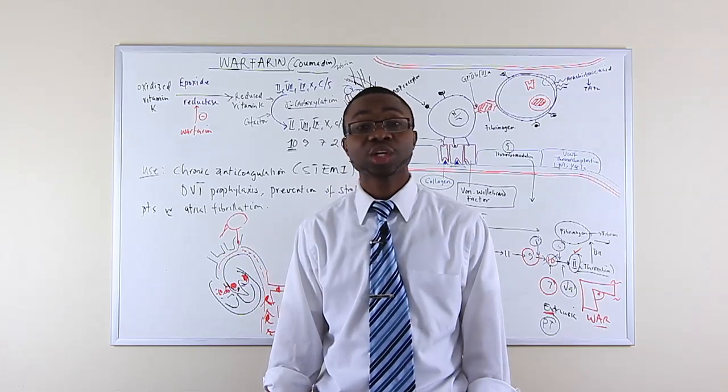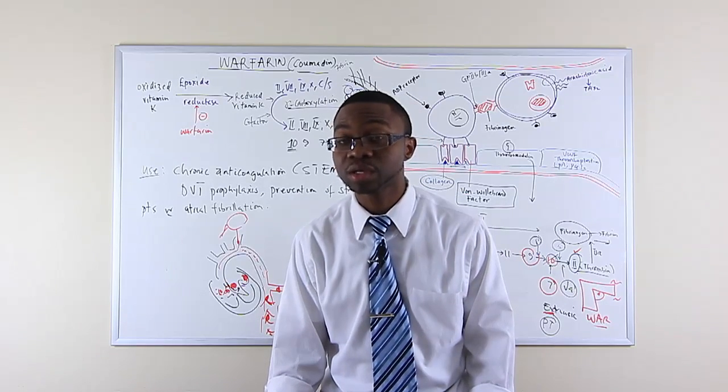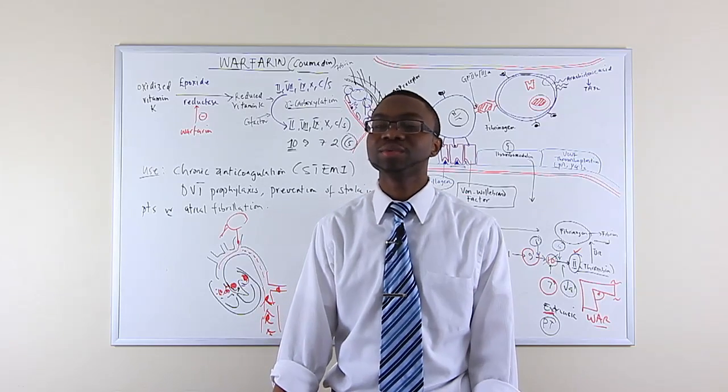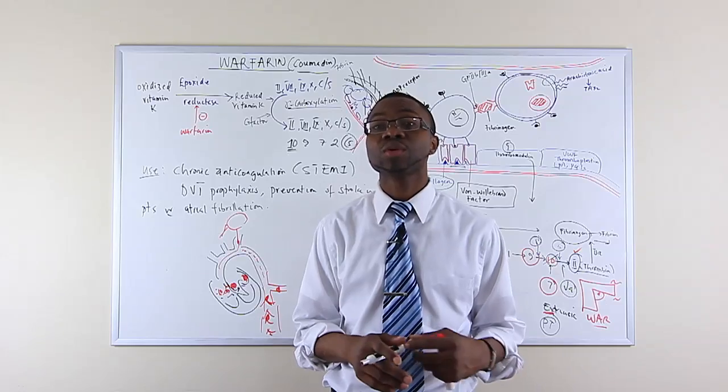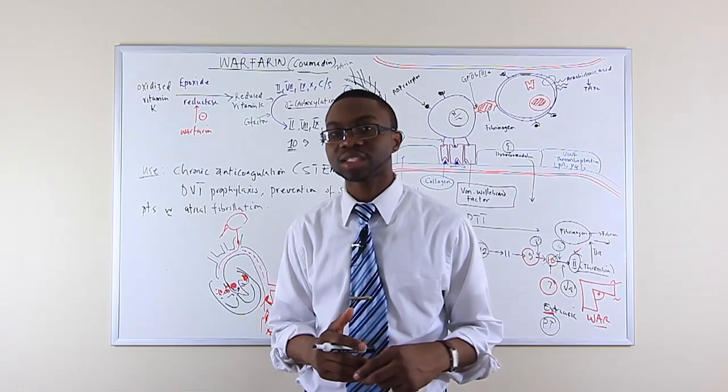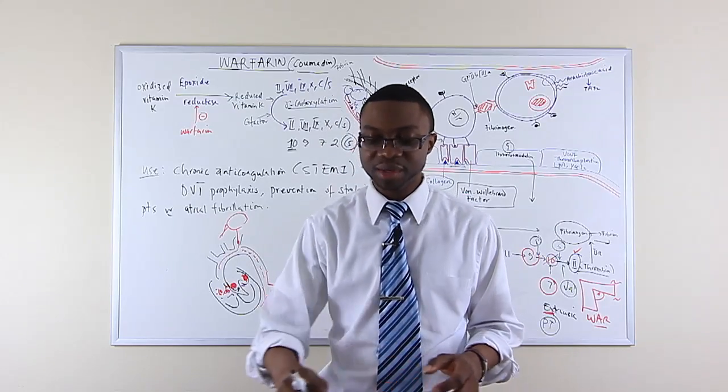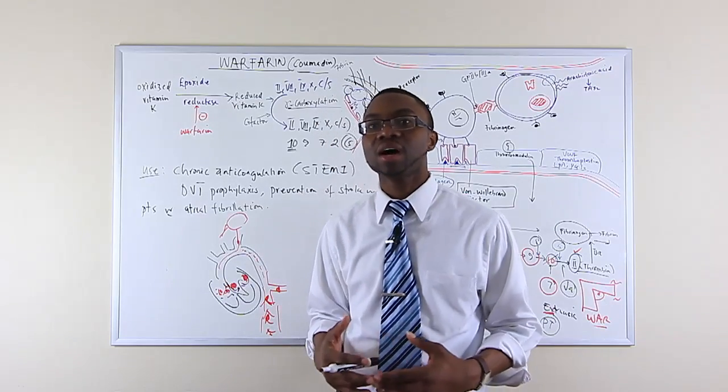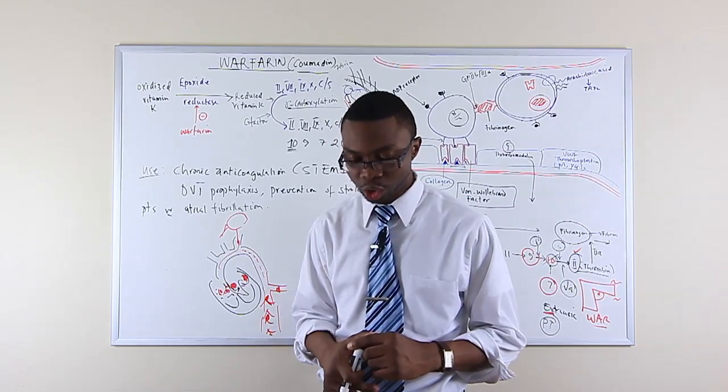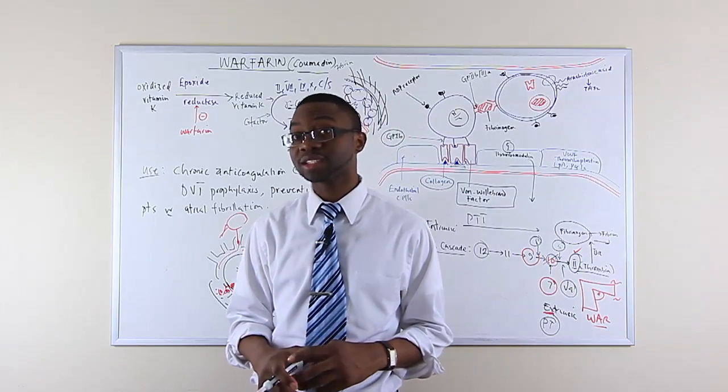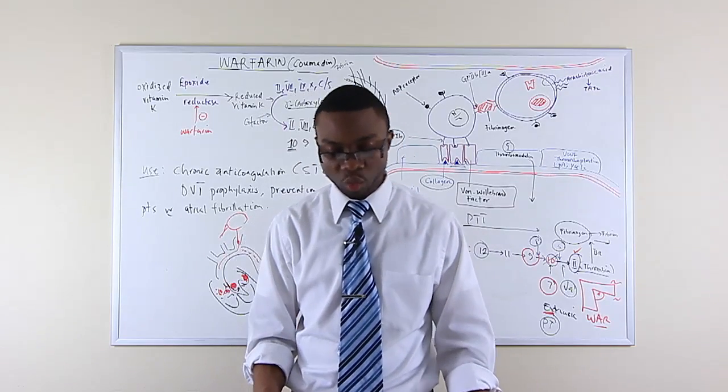Now we cannot give Coumadin for pregnant patients. It's a teratogen. The reason is because warfarin can cross the placenta. Compared to heparin, heparin does not cross the placenta. So that's a big difference between both of them. So in a pregnant female that develops a DVT or develops a pulmonary embolism, you can put them on heparin, but you cannot give them Coumadin. And we always monitor the PT and INR values in patients that have taken warfarin.